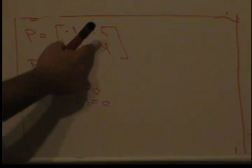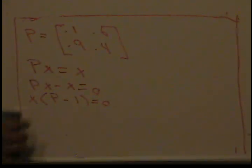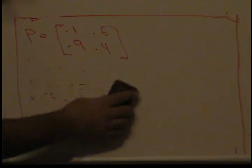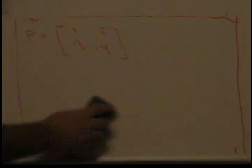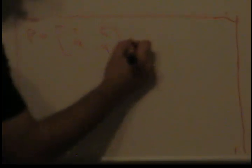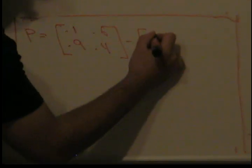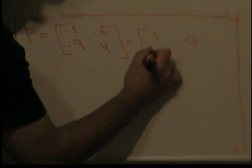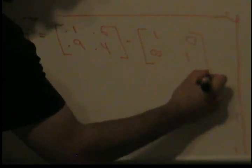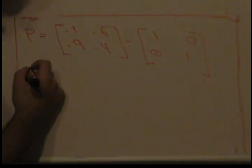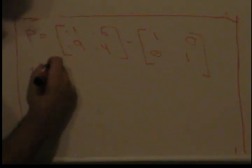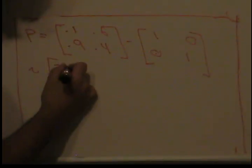Using this information over here, this tells us that we have to subtract this by the identity matrix. So let me go ahead and erase this. We're going to say minus 1, 0, 0, 1.